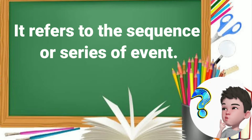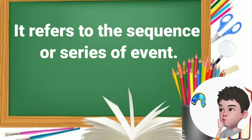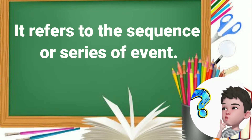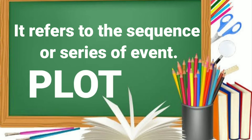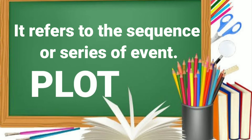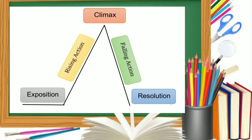The next element — the plot — refers to the sequence or series of events. In terms of literary genre, plot refers to the sequence or series of events. It is the structure of a play that tells what happens as the story goes.